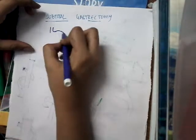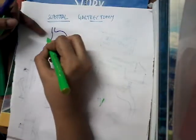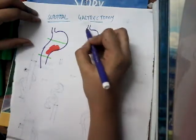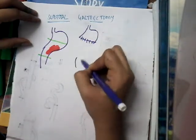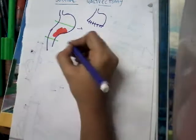Now let us learn about subtotal gastrectomy. In subtotal gastrectomy, the tumor should be present in the lower part of the stomach — either in the lower body or in the pylorus. The incision given is also an upper midline incision, and this part of the stomach is removed.